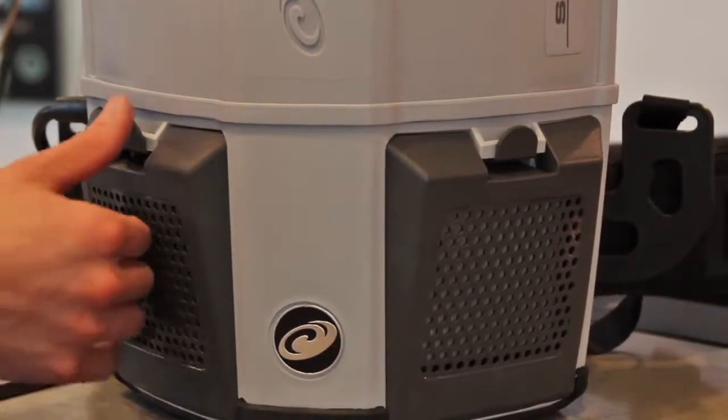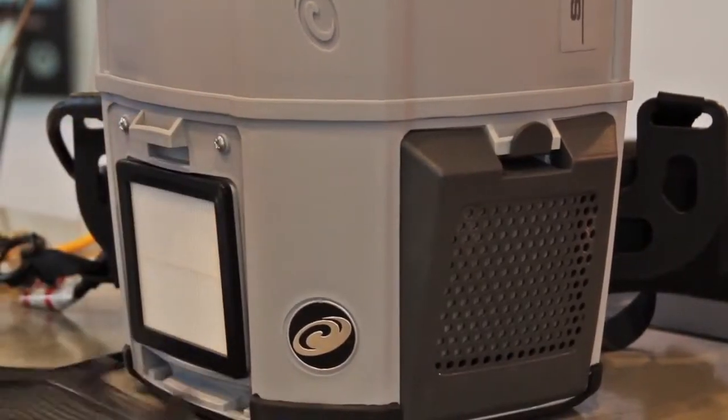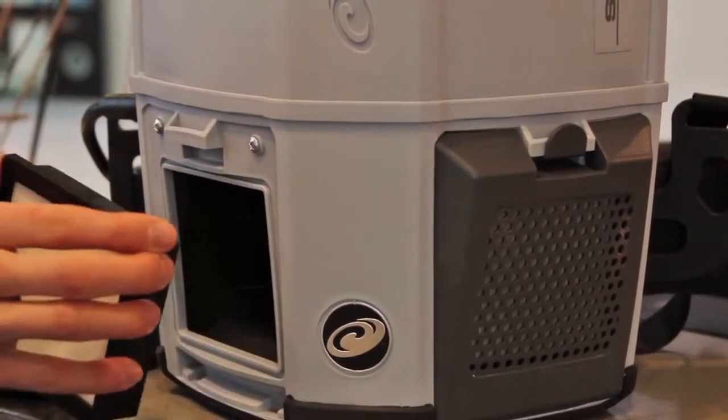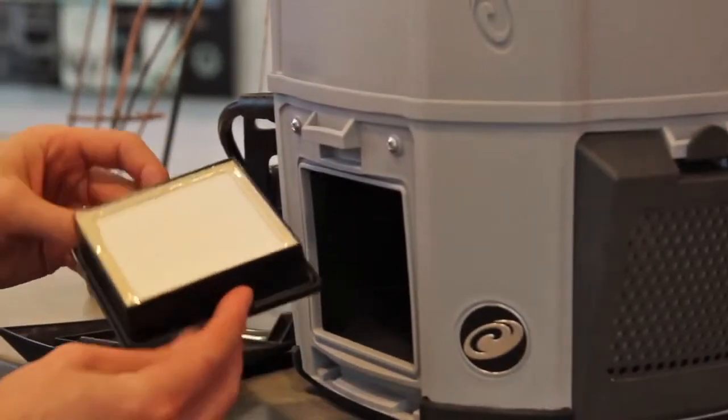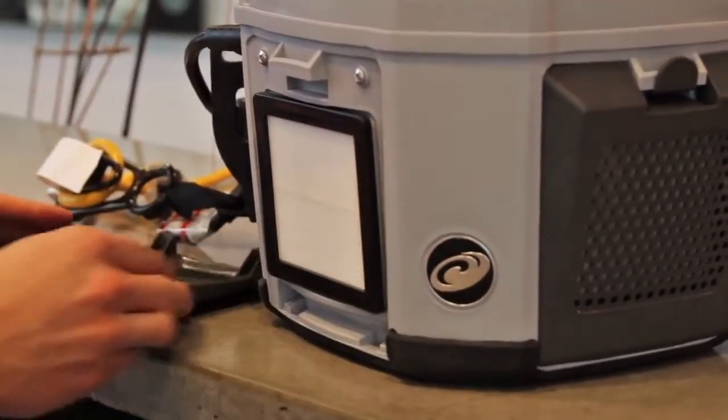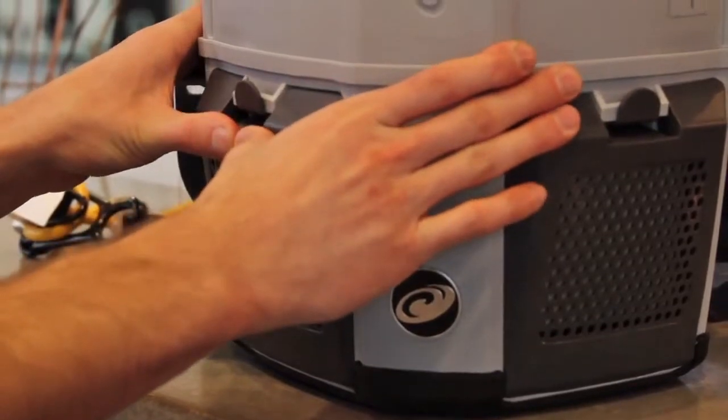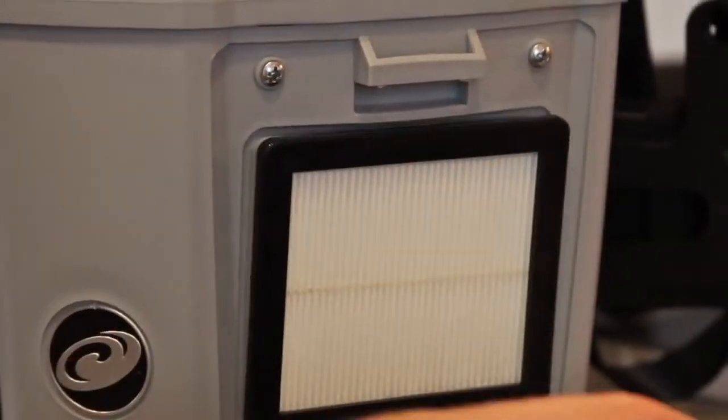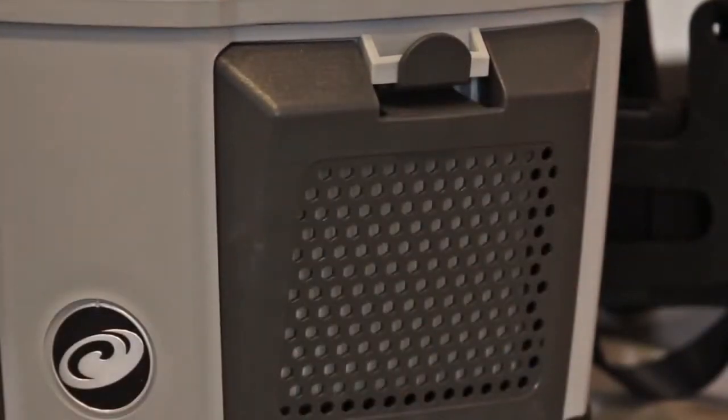To inspect or replace the HEPA filter, depress the raised portion of the tab on the filter door. Then pivot the door away from the vacuum body. Grasp the plastic housing on the HEPA filter and remove from the vacuum. To replace the filter door, align the two tabs to the housing, press in place, and then rotate upward. Be sure to snap the locking tabs of the spring finger behind the tab on the housing. You should hear an audible click if installed correctly.